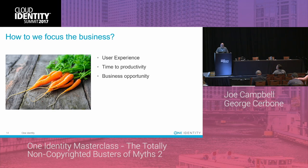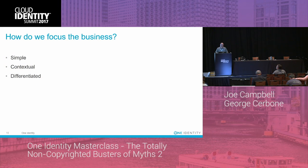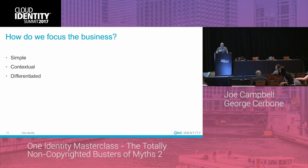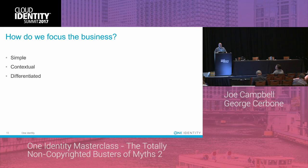How do we enable the business? When we're going to ask them to do things, there are three things we need to focus on: the interactions need to be simple, they need to be contextual, and they need to be differentiated.